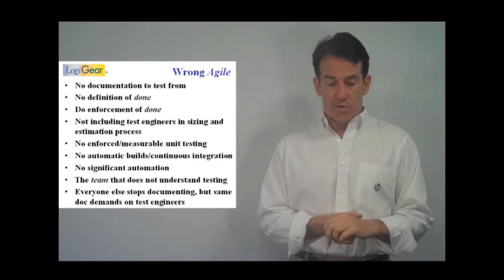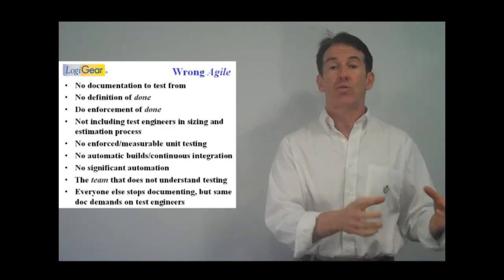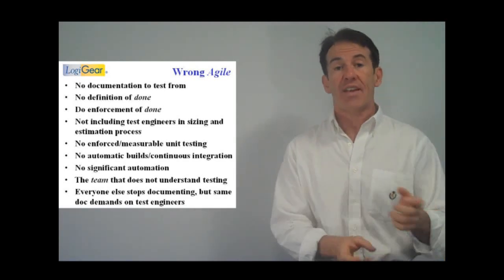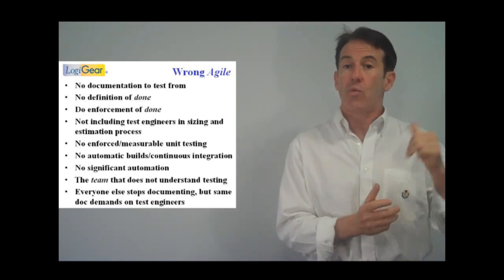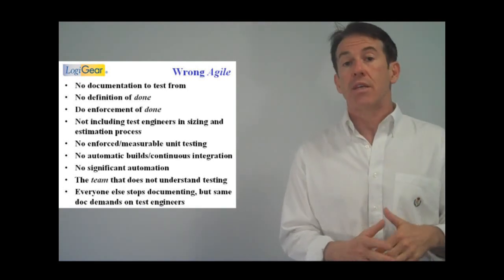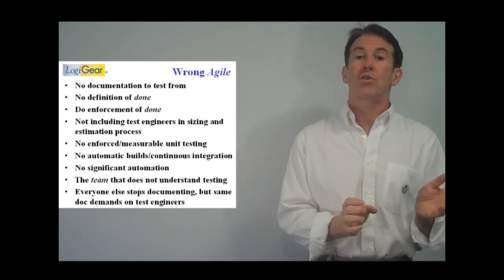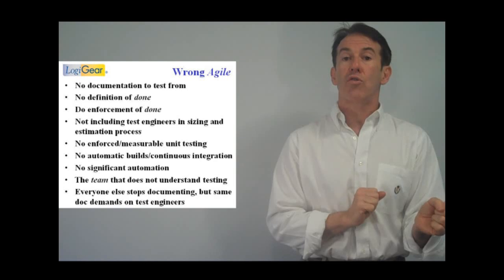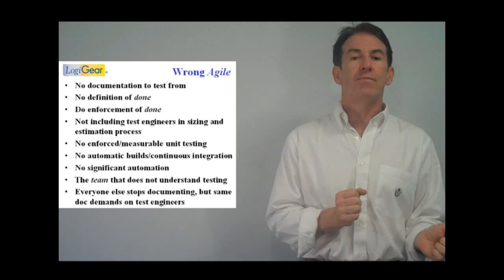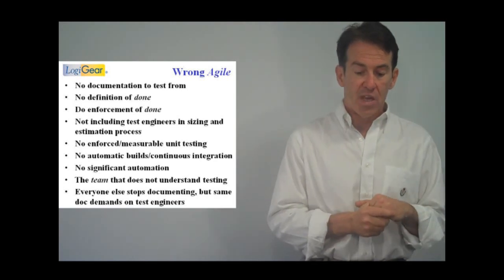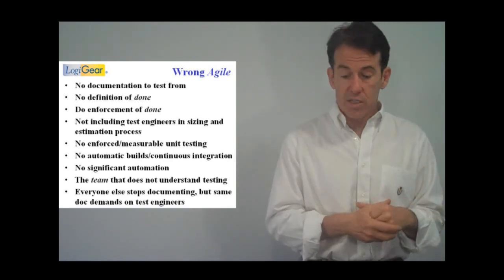So wrong Agile, bad Agile. Bad Agile is no documentation at all to test from. You have to have these written user stories when they're meant to be on index cards, that's fine. You don't have to have a big giant ALM tool, an application lifecycle management tool to manage your user stories. They can be on index cards, on a whiteboard. Great. But no documentation at all to test from, bad Agile. No definition of done, bad Agile. That people could be putting code into source control an hour before the sprint is done, an hour before the retrospective. You need a better definition of done, right? That's bad Agile. Or no enforcement of done. Like milestone criteria when they're not enforced, it's bad development practice.